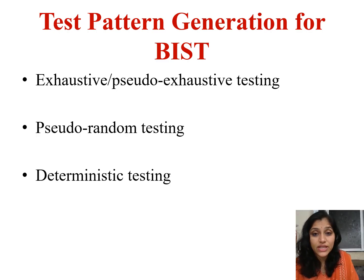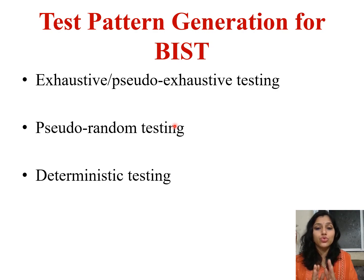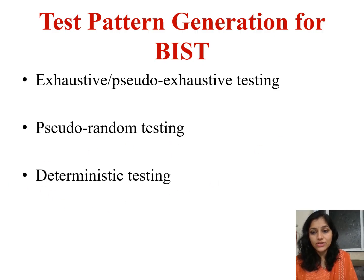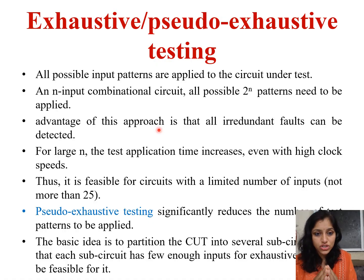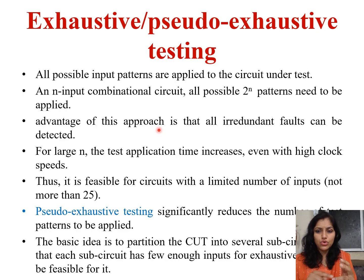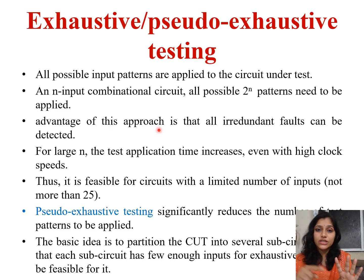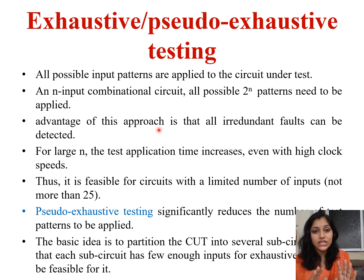For generation of test vectors or test patterns, multiple testing methods are available. The first method is exhaustive or pseudo-exhaustive testing. Exhaustive means it generates all possible test vectors. For an AND gate it generates 00, 01, 10, 11 — all test vectors. If I have 4 inputs to my circuit, it generates 2 raised to 4, that is 16 test vectors total, because this exhaustive pattern generator generates every combination.